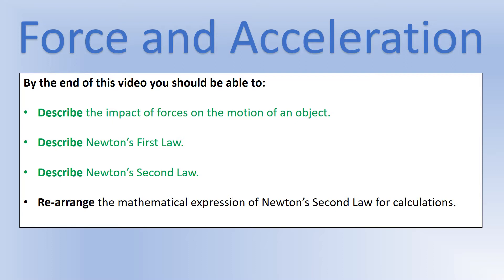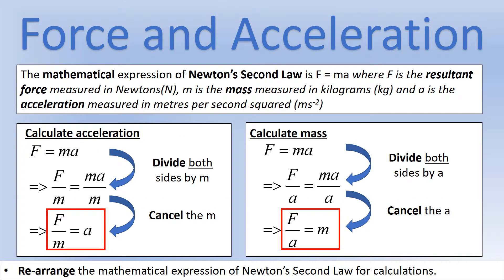That finishes describing Newton's second law. Now let's look at how we can apply it in calculations. Because the equation is F = ma, there are three different forms we can use. The force must be measured in newtons, the mass in kilograms, and the acceleration in meters per second squared to put values into this equation.